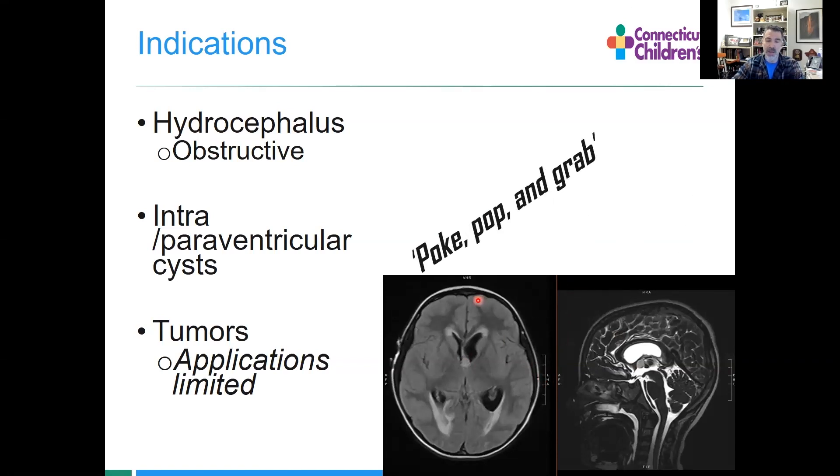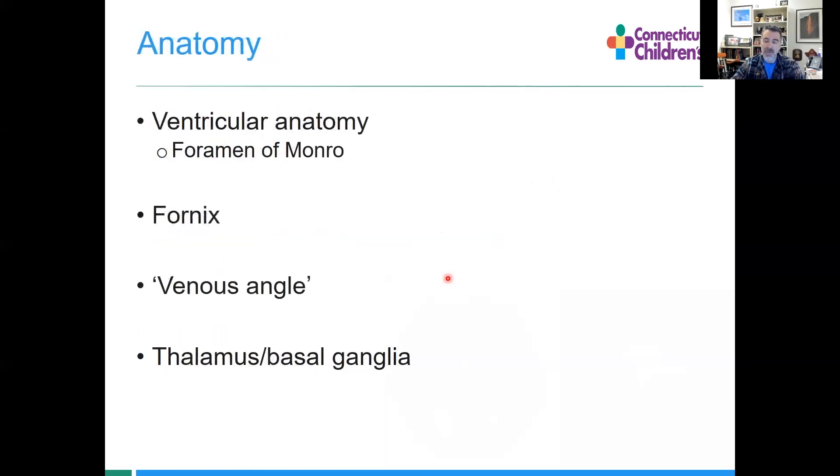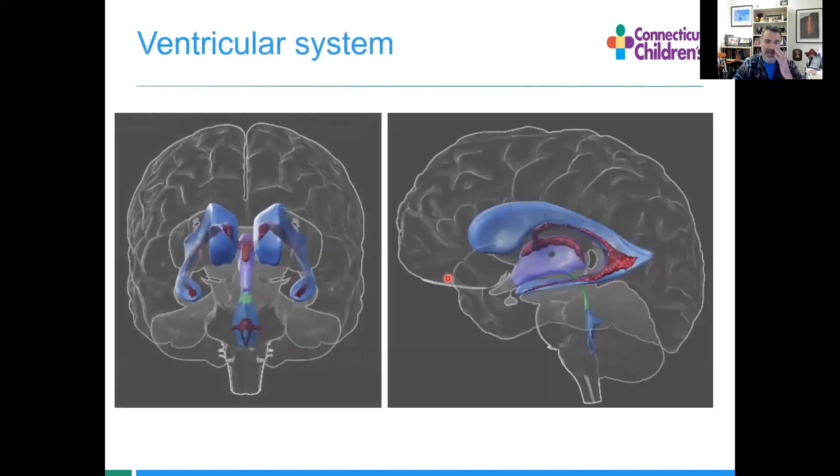Basically we can poke, pop, and grab - those are the things we can do. You do have to have some familiarity with anatomy. As a student, understanding these four basic structures will be helpful: the ventricular anatomy and pathway, the fornix, the venous angle as a deep venous structure, and where the thalamus and basal ganglia sit.